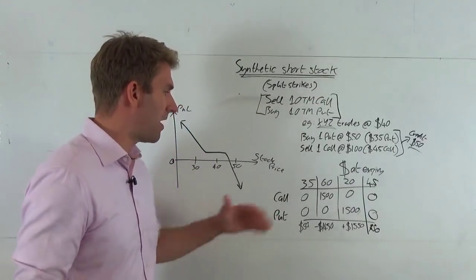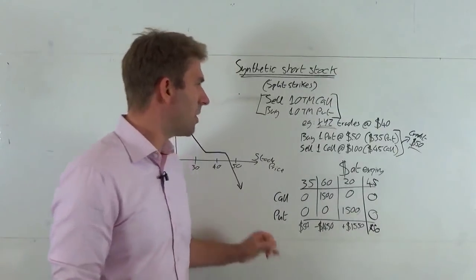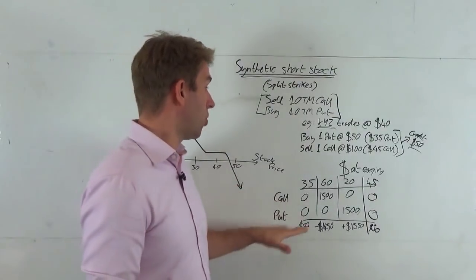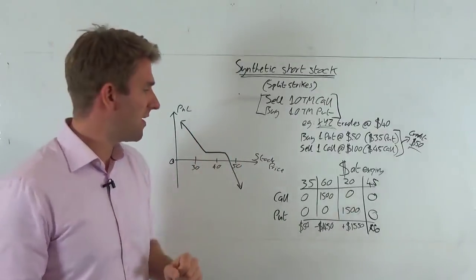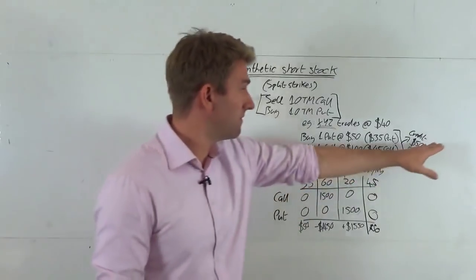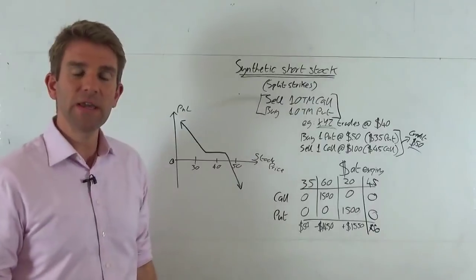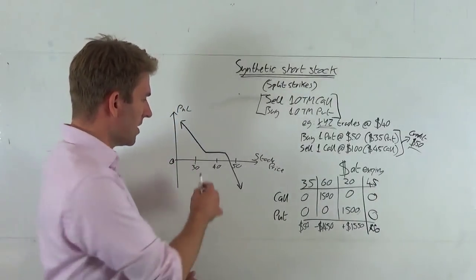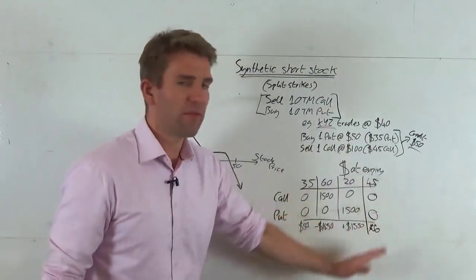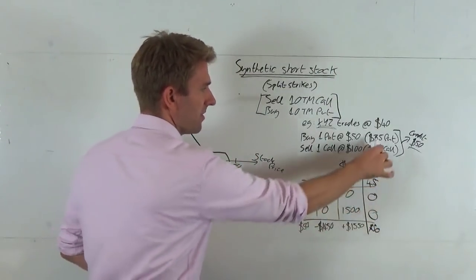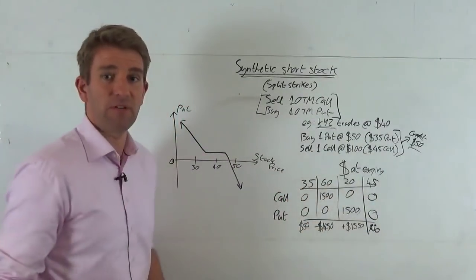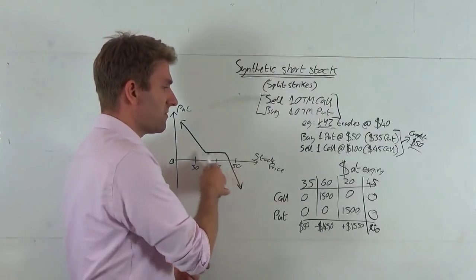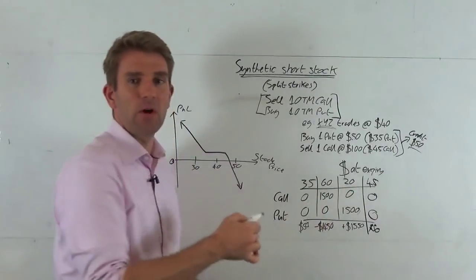So what happens at $35 at expiry? The $45 call is worthless — no reason to buy at $45 when it's $35. The $35 put is also worthless — the right to sell at $35 when it's already $35. Both options expire worthless, but we keep the $50 credit. Similarly at $45, both expire worthless and we're still up $50. Between $35 and $45, we have this plateau — we're guaranteed that $50 credit. We don't make more if we're a little right, and we don't lose if we're a little wrong.